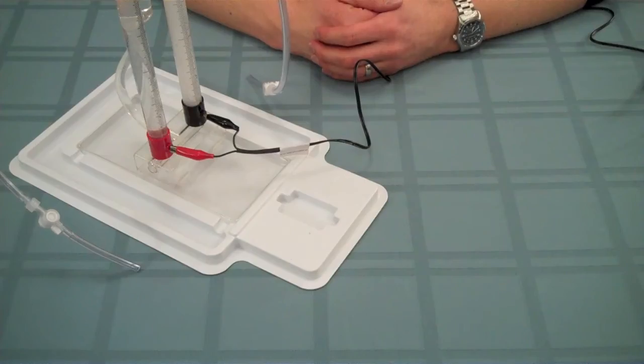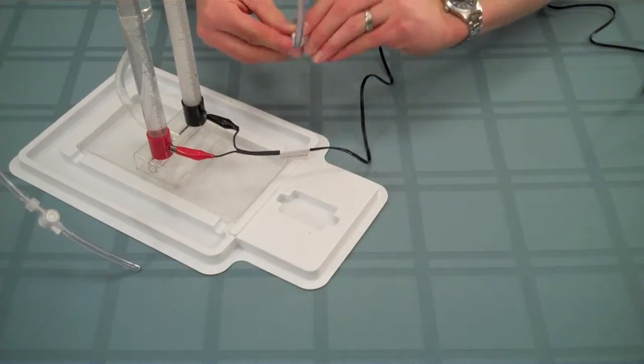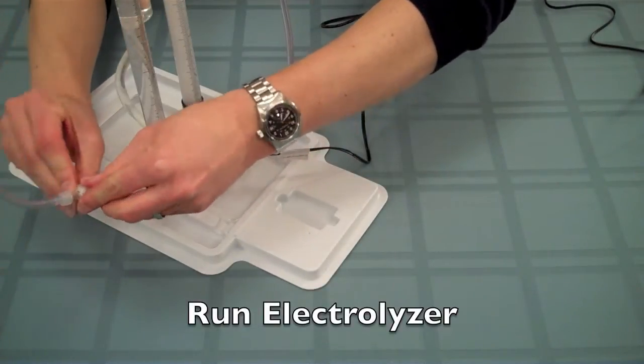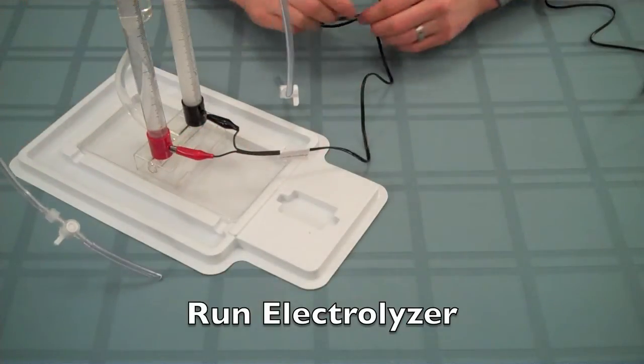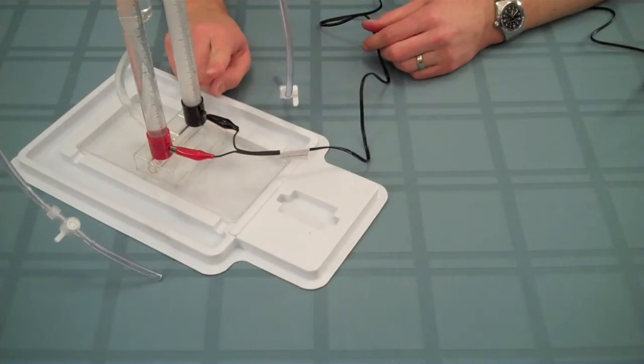After about one minute or so, go ahead and close both valves on the gas supply tubes and let the electrolyzer run until the hydrogen storage column is nearly full.